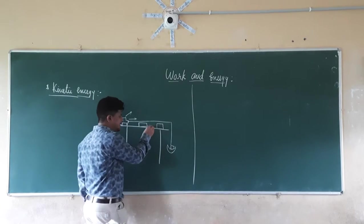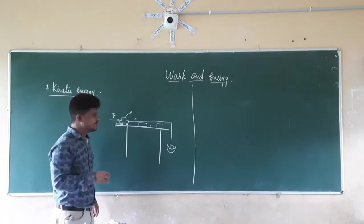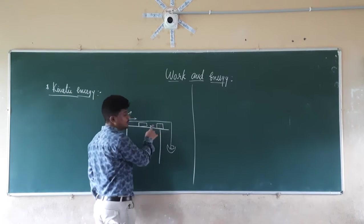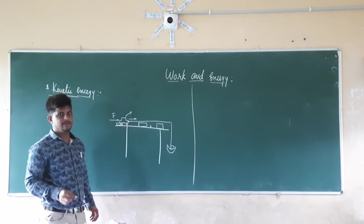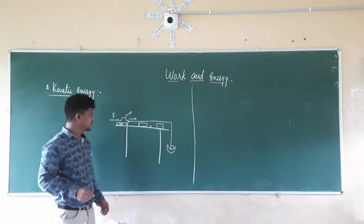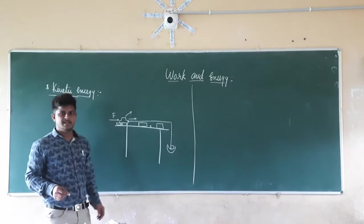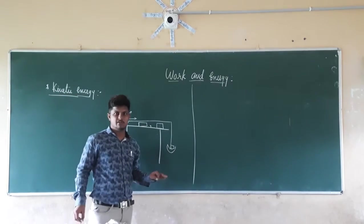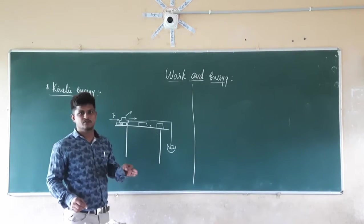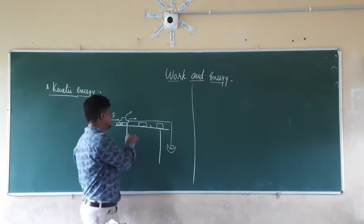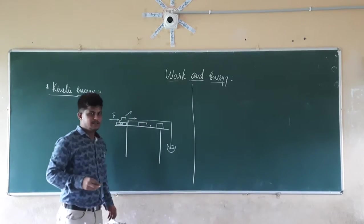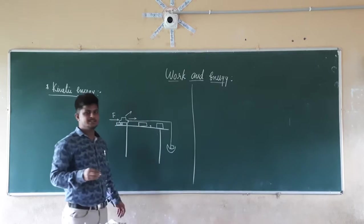Previously the car moved up to a certain point, but this time it is moving the wooden block further and also moving the second wooden block in the forward direction. Work is done on the first wooden block as well as the second wooden block, since work is the product of force and displacement. The toy car applies force on the wooden blocks, causing displacement, so work is done.